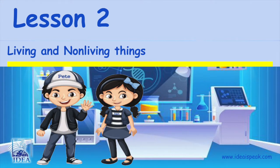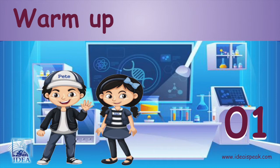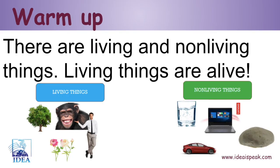Lesson 2: Living and non-living things. Warm up. There are living and non-living things. Some living things are a tree, a chimpanzee, a man, or flowers. Some non-living things are a glass of water, a computer, a car, and a rock.